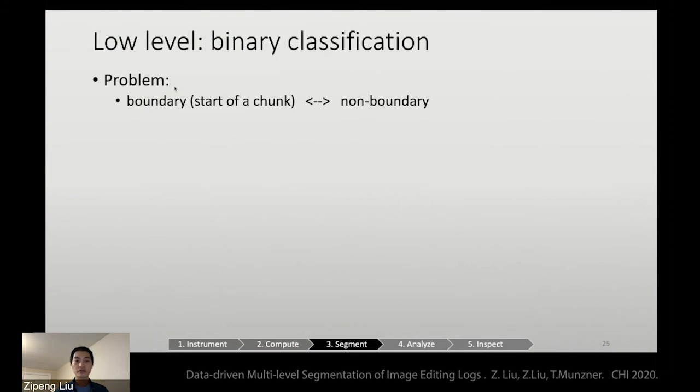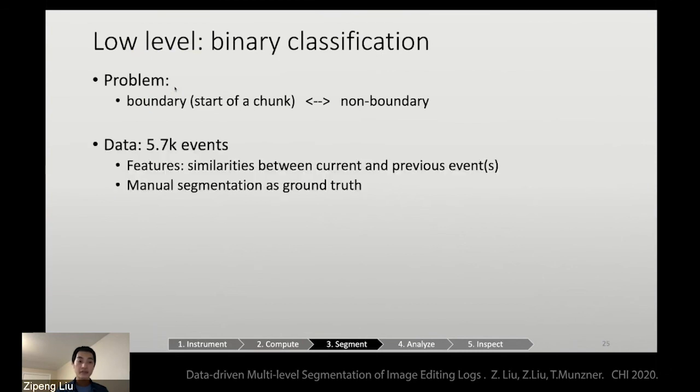For the low-level, we're actually translating the segmentation problem into a binary classification. We're trying to predict whether each event is a boundary, meaning the start of a chunk, or a non-boundary event. The data we have is 5,700 events. We computed the features, which are the similarities between current and previous events. And we used our manual segmentation as the ground truth. We use a support vector machine with linear kernel, a pretty standard machine learning technique, to do the prediction.